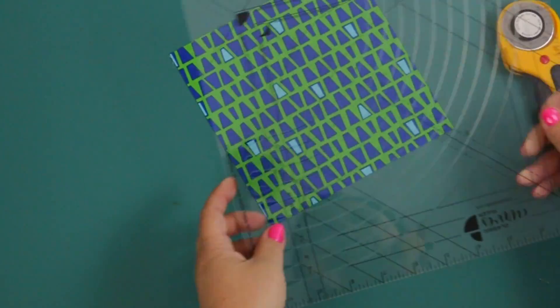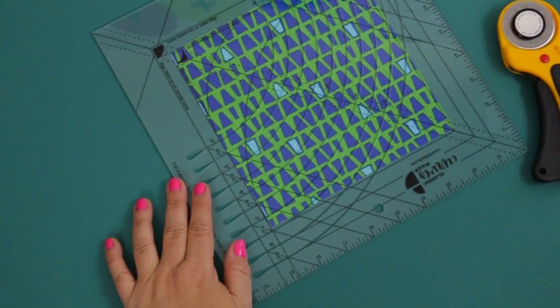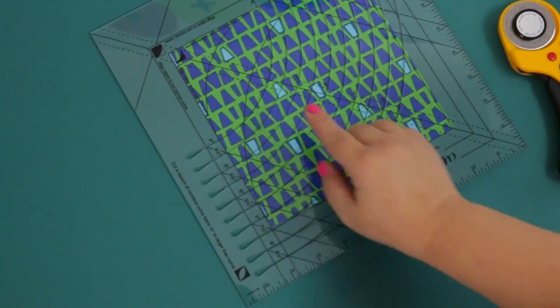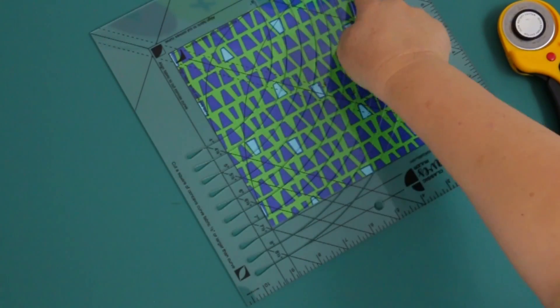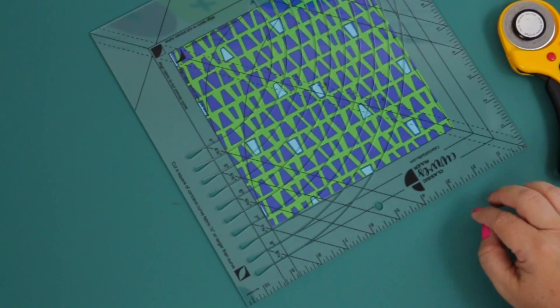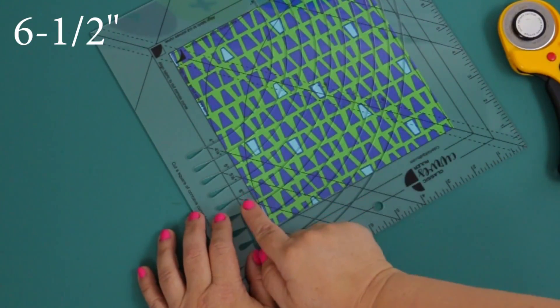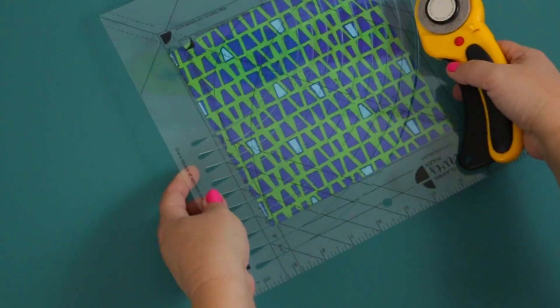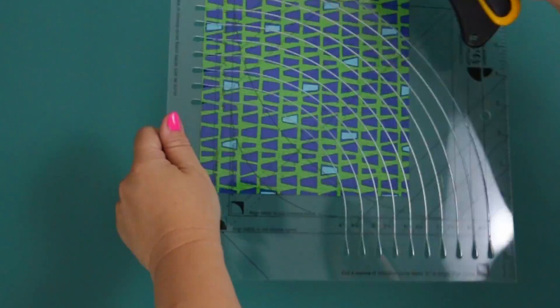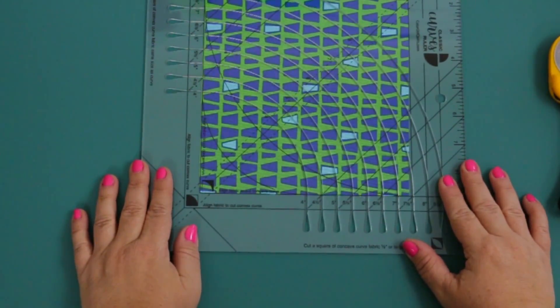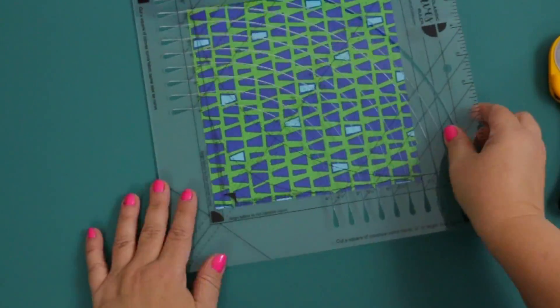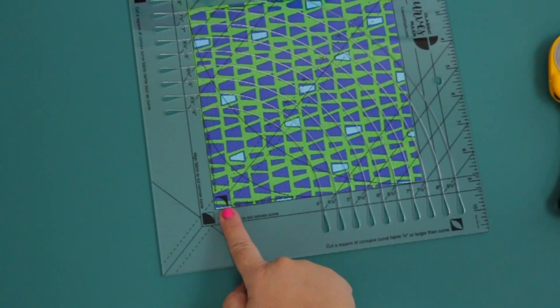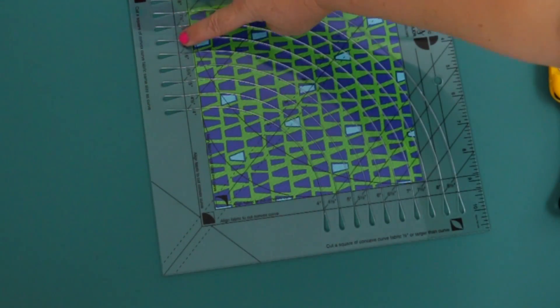And now you're going to align the corner of the fabric with the right angle on the ruler next to the concave curve symbol. You're going to cut the fabric at the same measurements as the concave curve. So in this case, we're going to cut the 6-1/2-inch curve. And now you're going to want to rotate your material so that it's the most comfortable for you to cut. In my case, the way that looks good on the screen isn't always the most comfortable for me to cut because I am right-handed. So I've rotated it, and now we're going to go ahead and cut the 6-1/2-inch curve.